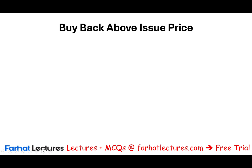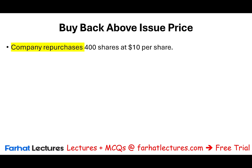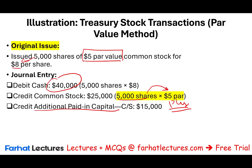At some point down the road, the company decides to repurchase 400 shares at $10. They originally sold those shares at $8 and are now buying them back at $10. What does that mean? It means they received $8 when they sold them, and now they're paying $10 to buy them back.